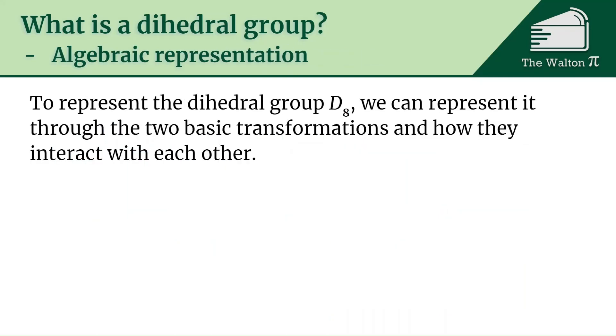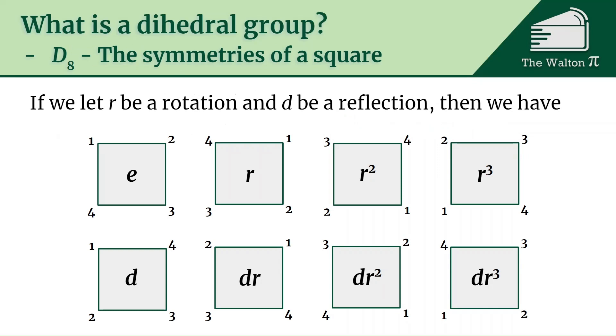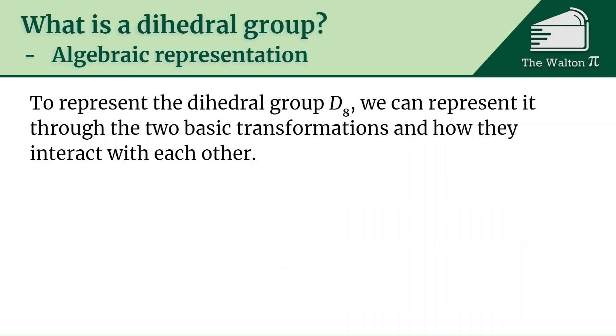To represent the dihedral group D_8, the symmetries of the square, we can represent it through the two basic transformations—rotations and reflections. If we represent it through those two basic transformations, we can describe how they interact with each other. We're going to let e be the identity, and then D_8 is going to be this. So this is how we can write what a group is.